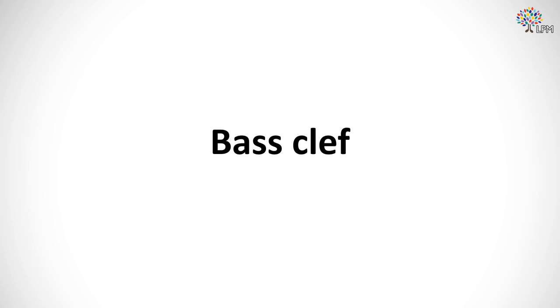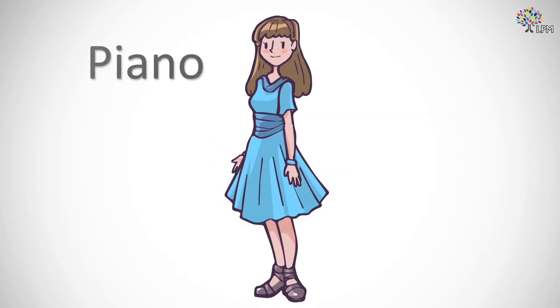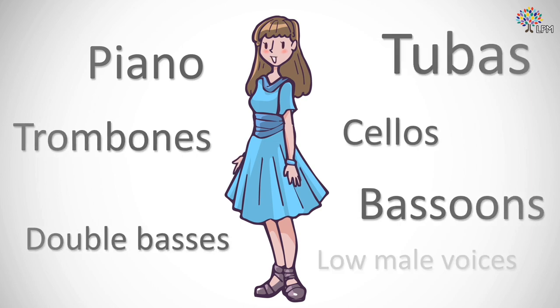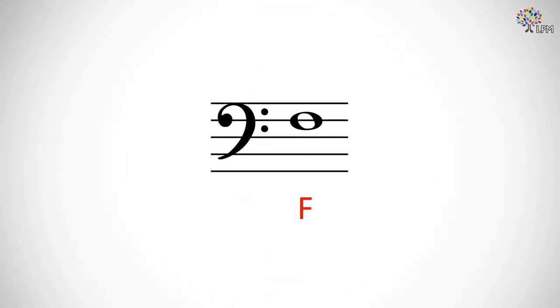Bass clef. As you might have guessed from the word 'bass,' like a bass guitar or a jazz bass, the bass clef is used to notate pitches in the lower half of the piano's range and for lower-pitched instruments like cellos, double basses, bassoons, trombones, tubas, and low male voices. Rather than marking where G is as the treble clef does, it marks the location of the F below middle C, which sounds like this.